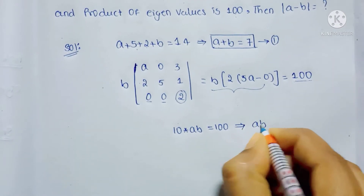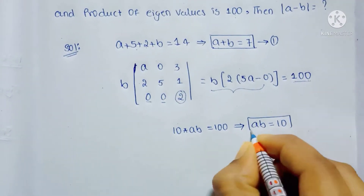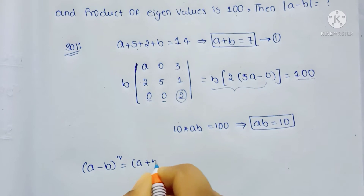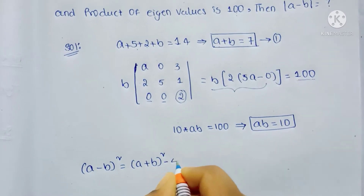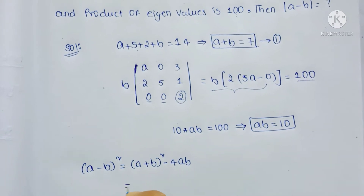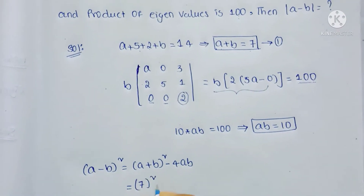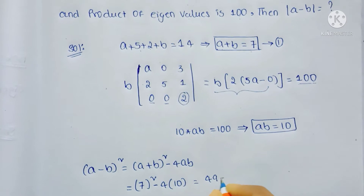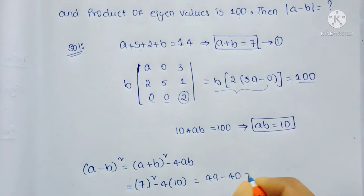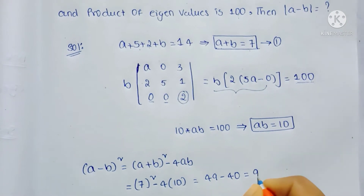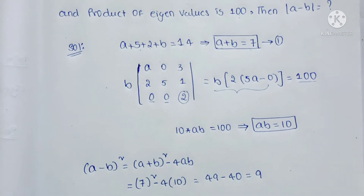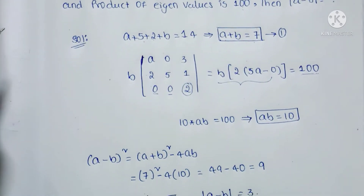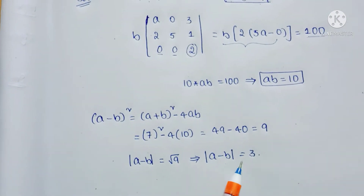So we get AB equal to 10. And we know that (A minus B) squared equals (A plus B) squared minus 4AB. Here A plus B equals 7, so we get 7 squared minus 4 times 10, which is 49 minus 40. We get A minus B whole squared equal to 9. Then A minus B equals plus or minus 3. So the modulus of A minus B equals 3.